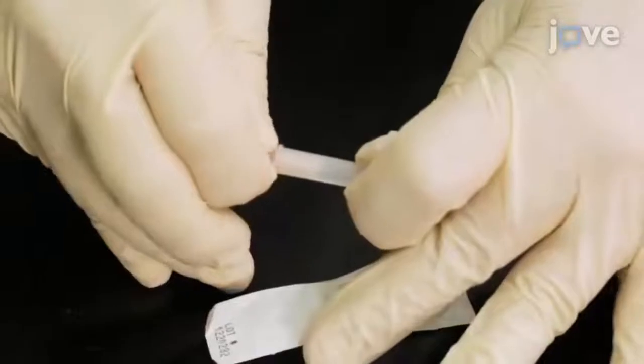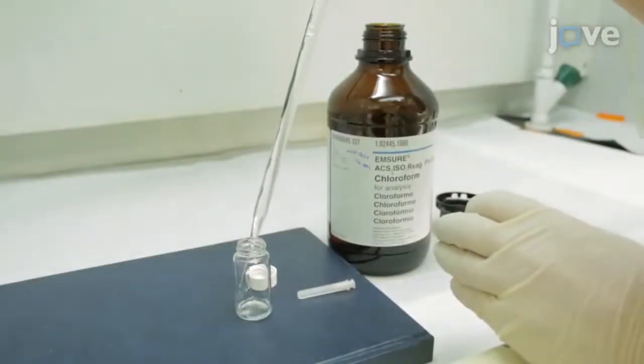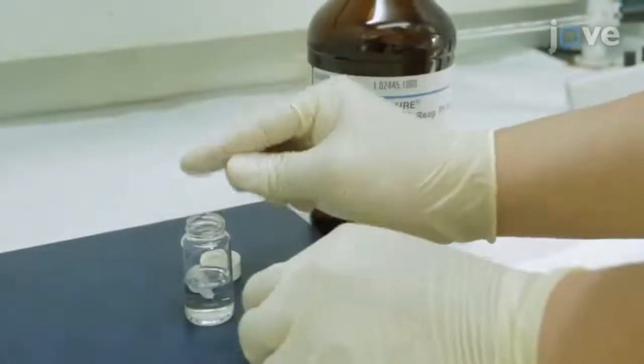Now, prepare 30 gauge stainless steel needles for the injection. First, pre-clean them by soaking them in chloroform for three days in a glass vial.